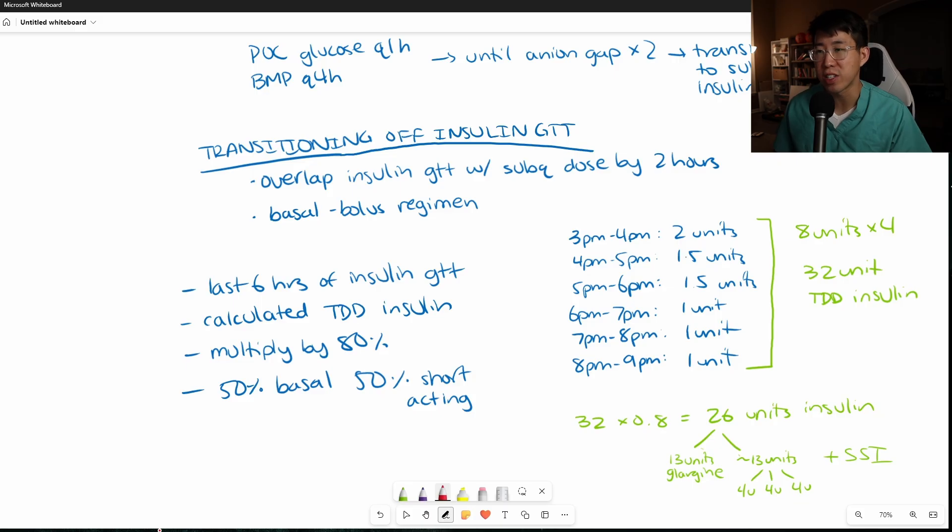I would say the most important things for interns to know is that number one, you absolutely have to overlap the insulin drip with your first subcutaneous dose by two hours. You're going to be asked that all the time. So you just really need to know that like the back of your hand. And then also you really do need to understand how to calculate the insulin dosing off of the insulin drip. That's going to come up all the time. And you're going to have to really know that like the back of your hand as well. So this whole section right here is very important for you to know.